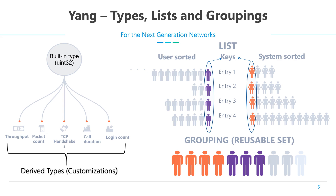The next useful Yang element is called a grouping. A grouping is a set of values of the same or different type which can be reused in multiple places in a particular Yang data model. For example, the IP address and subnet mask normally go hand in hand in many places. A grouping can be defined to contain both these elements and reused wherever IP address and subnet mask has to be available in the data model.